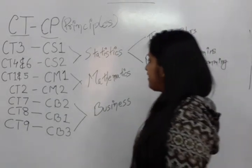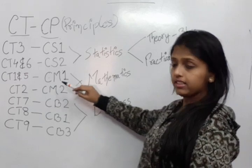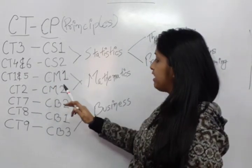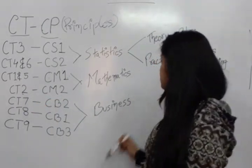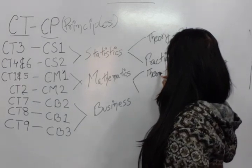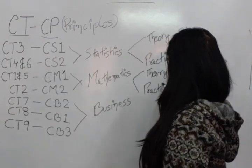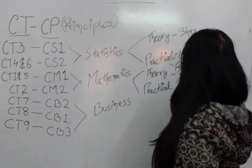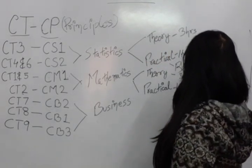And again, the Maths paper is also divided into 2 portions. CT1 and CT5 together comprise the CM1 syllabus, and the CM2 syllabus is about the CT2 syllabus. This Maths paper is also divided into 2 parts, Theory and Practical. The Theory paper is for 3 hours whereas the Practical paper is for 1 hour 30 minutes.